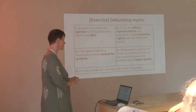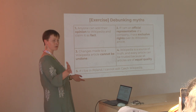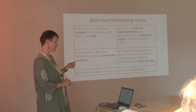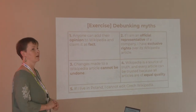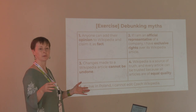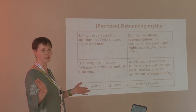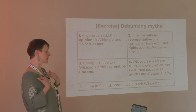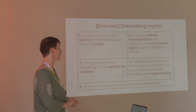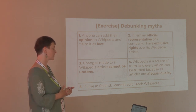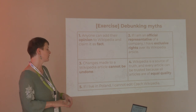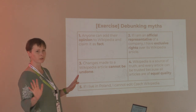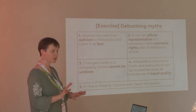There are a lot of myths that people have when they enter the room — they can be more or less aggressive about them. Common myths include: that anyone can add their opinion to Wikipedia and claim it as fact; that there are many jokes about people changing articles to win arguments; that if you are an official representative of a company, you have rights over an article; that changes to Wikipedia articles cannot be undone; and that Wikipedia is a source of truth where every article can be trusted because all articles are of equal quality.